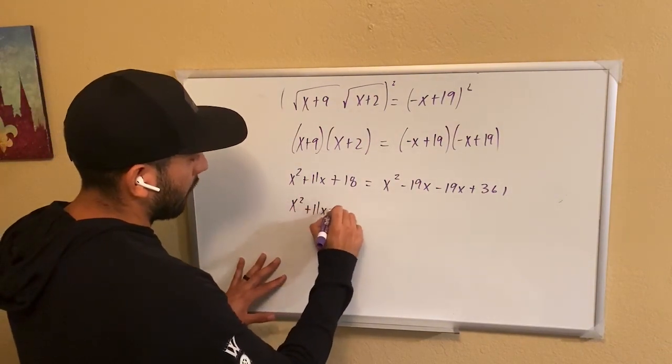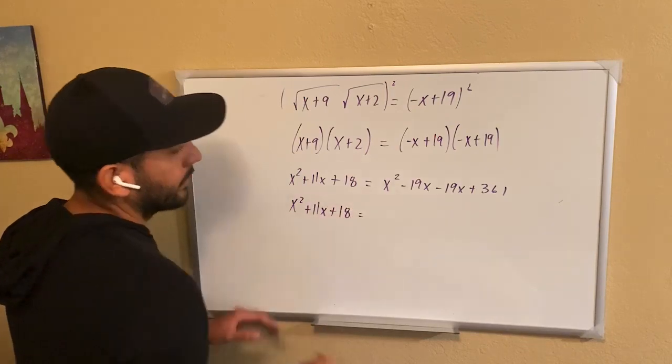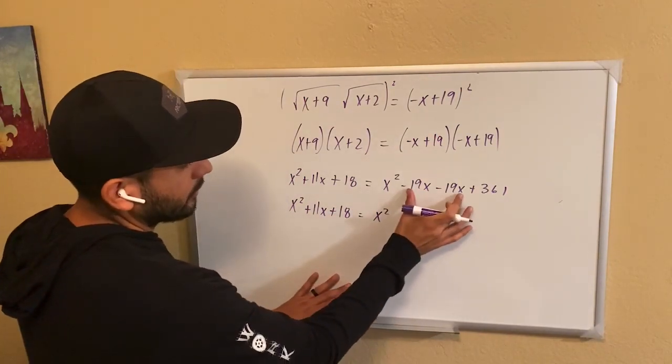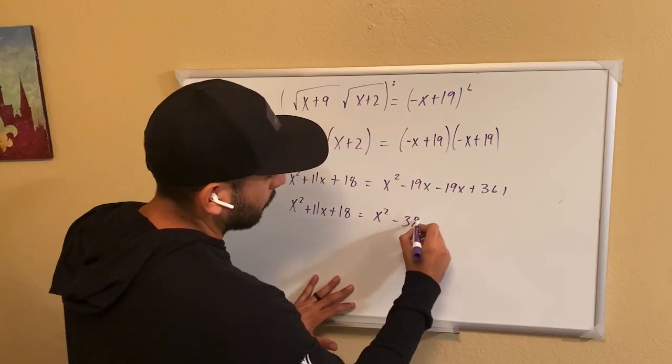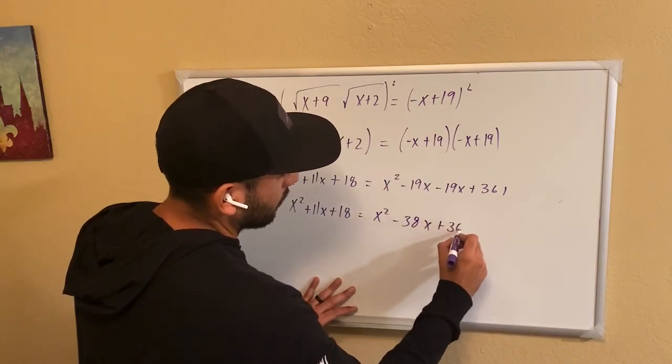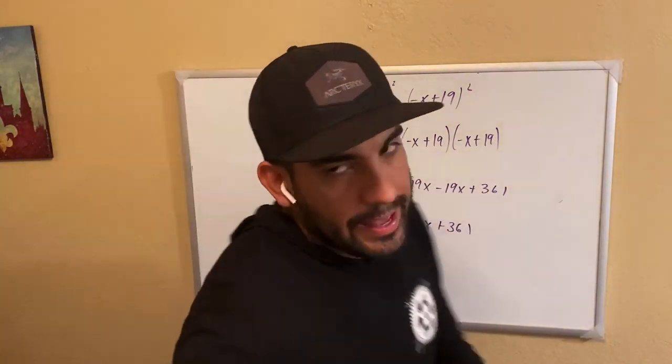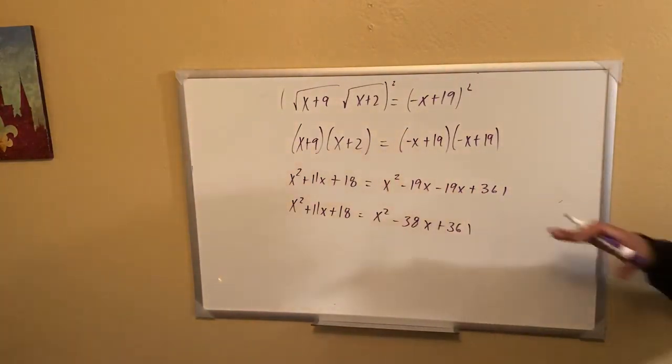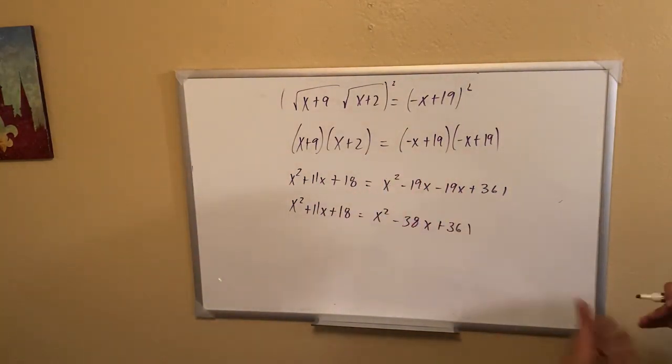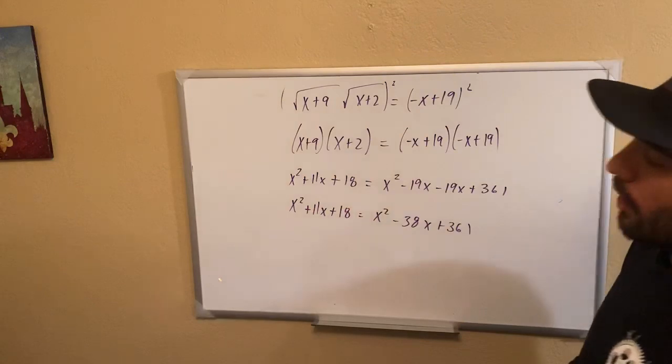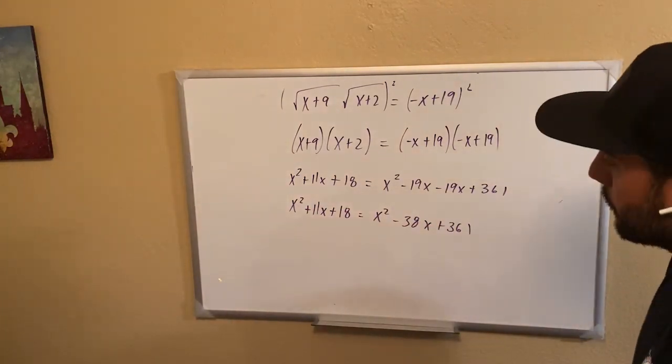Let's go ahead and simplify the right side. On this one, I get x squared. These two can be combined to become negative 38x plus 361. Okay, I have x squared on the left and the right. Let's try to bring and combine some of these values, so I bring it to the other side.